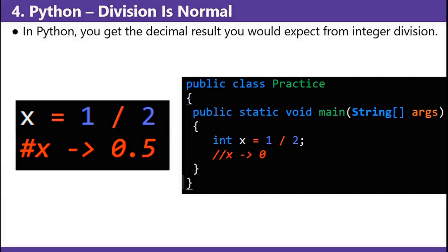Division is normal in Python. In Python, you get the decimal result you would expect from integer division. Java's default result is hidden behind the double forward slash operator in Python.